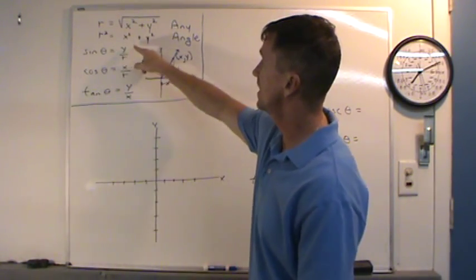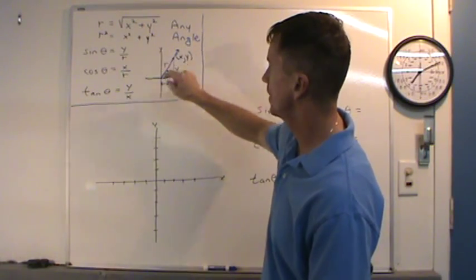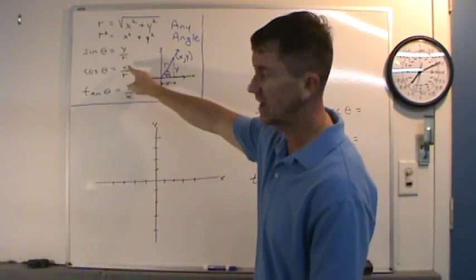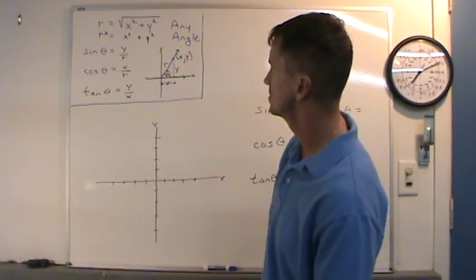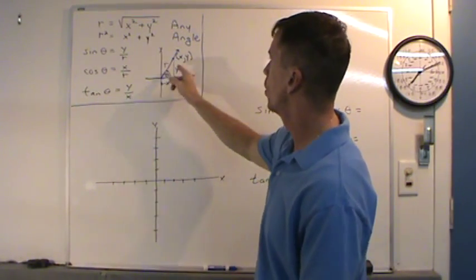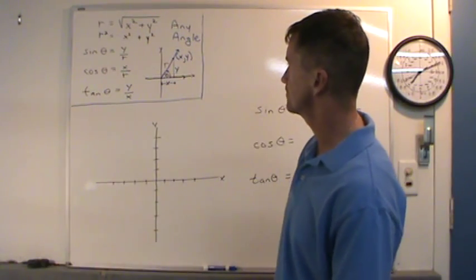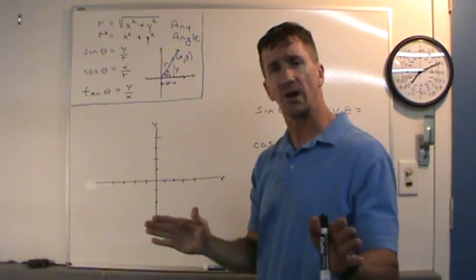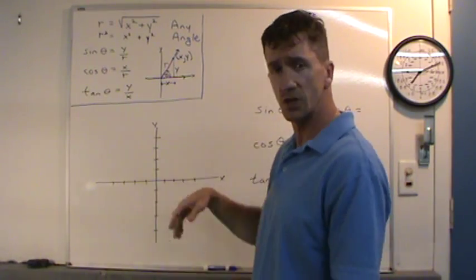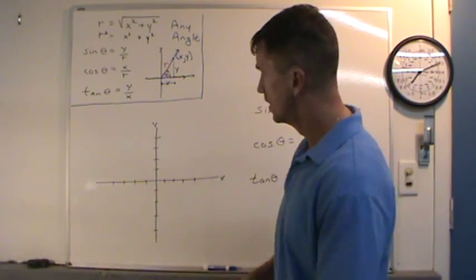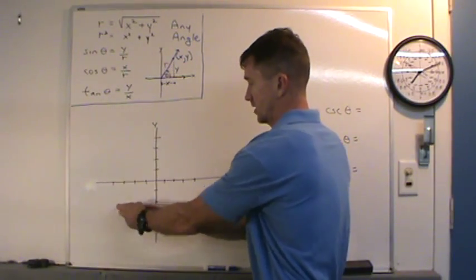Sine of theta will be defined as y over R — that's opposite over hypotenuse. Cosine of theta is x over R — that's adjacent over hypotenuse. And tangent of theta is y over x — opposite over adjacent. This is true for any angle, so this angle can be rotated into quadrant 2, quadrant 3, or quadrant 4 — quadrant 1, 2, 3, and 4.